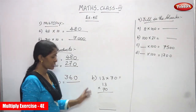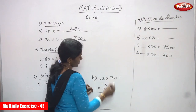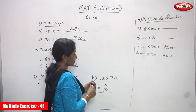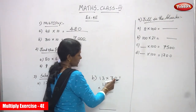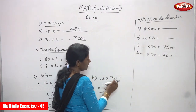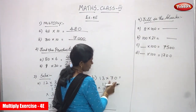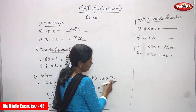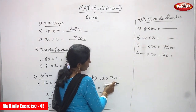Now we are going to see the sequence — 13 into 70. First you must multiply the numbers. 13 into 70: 70 means 7 into 10, so we are multiplying 13 by 7 and by 10.